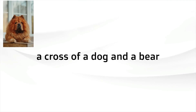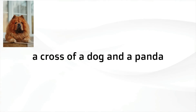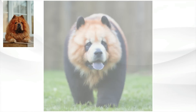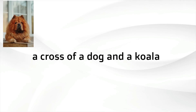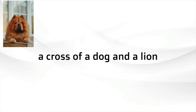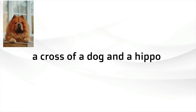What about a cross of a dog and a bear? Using the original image to play around with what that might look like. A cross of a dog and a panda — again, using the original image from Unsplash, but extrapolating that out, conceptualising what that might look like. A cross of a dog and a koala — super appropriate for Australia. A cross of a dog and a lion. And this is a cross of a dog and a hippo.